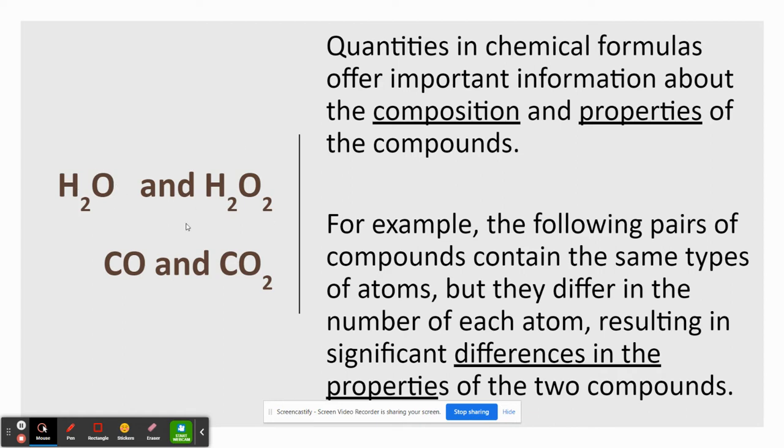So for example, H2O is 1O, but H2O2, which is hydrogen peroxide, has 2Os. In CO, there's only 1O, but in CO2, there's 2Os. And the fact that they're different by this number of atoms gives them different properties overall.